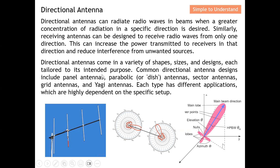Directional antennas come in a variety of shapes, sizes, and designs, each tailored to its intended purpose. Common directional antenna designs include panel antennas, parabolic antennas, sector antennas, grid antennas, and Yagi-Uda antennas. Each type has different applications highly dependent on the specific setup, concentrating energy in a very particular direction like a pencil beam.